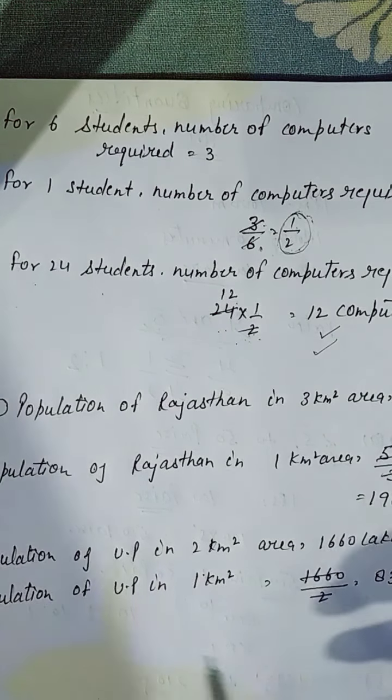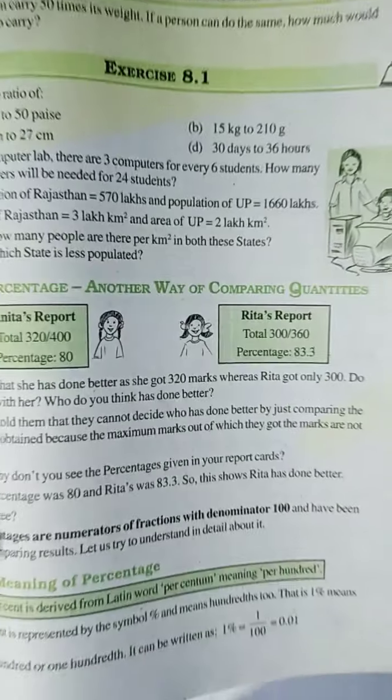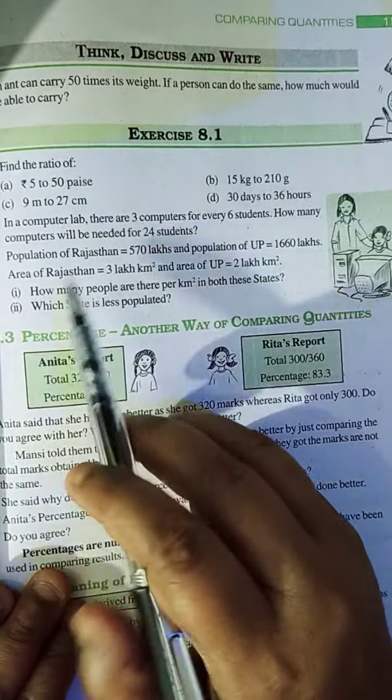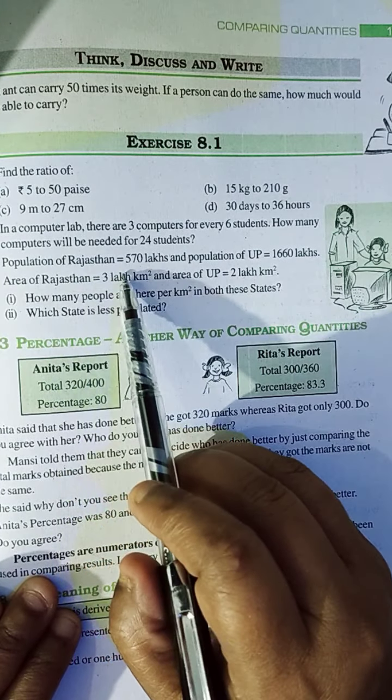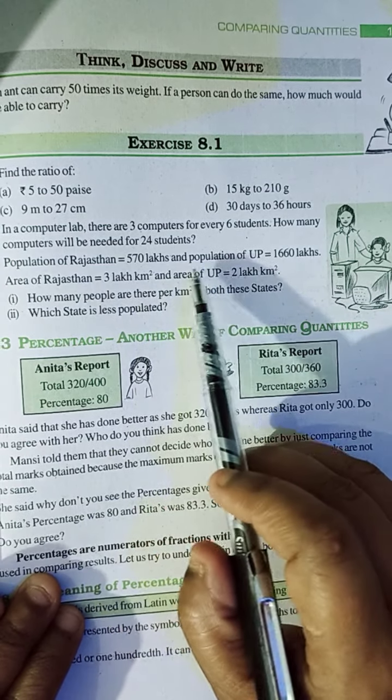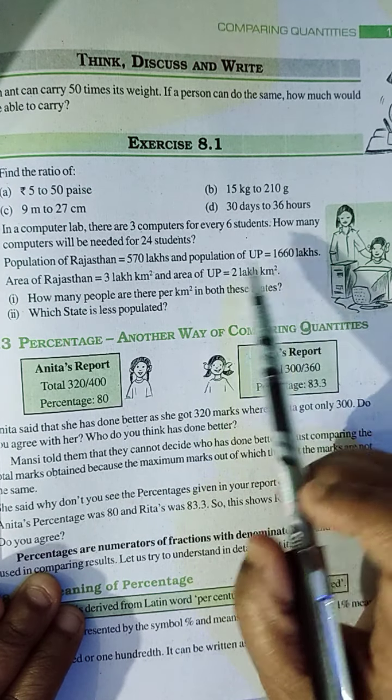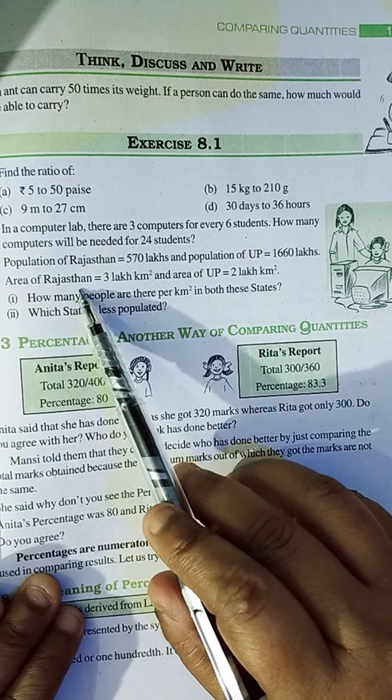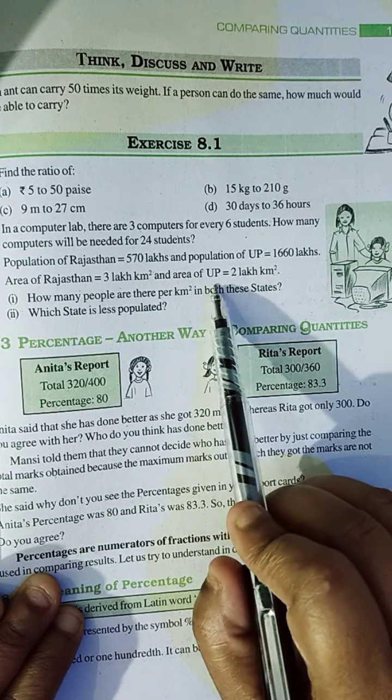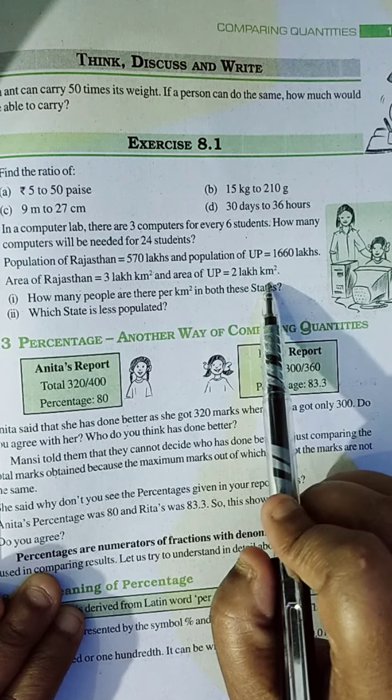Coming to the third question. Third question kya hai? Dekhate hai, question read karte hai. Population of Rajasthan is equals to 570 lakhs. And population of UP is equals to 1660 lakhs. Area of Rajasthan 3 lakh km square and area of UP 2 lakh km square.